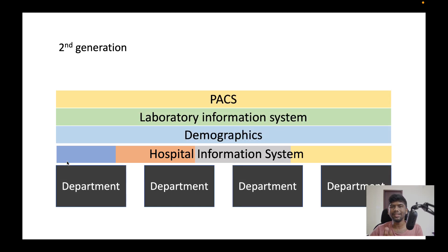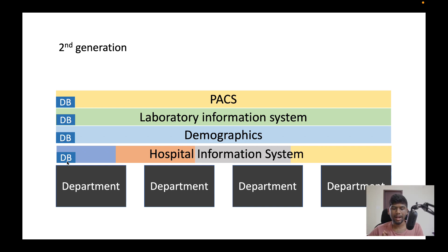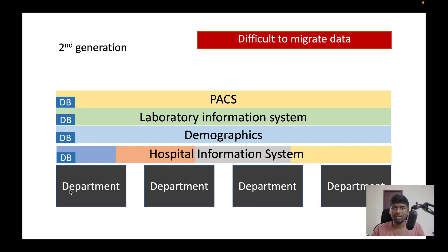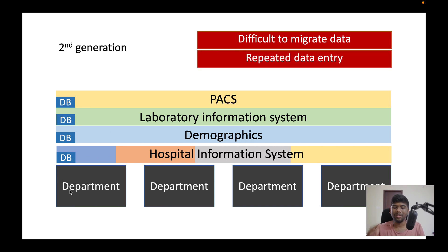Moving to generation 2, you have more specialized systems coming in — and again, all of them have their own databases. You have a laboratory information system, a separate module for demographics, a PACS system, and multiple departments. The same problems from before remain: you still need developer help to move data to another system. Exceptions like PACS exist where there's already a standard — DICOM — but for the remaining systems you really have to migrate the data yourself.